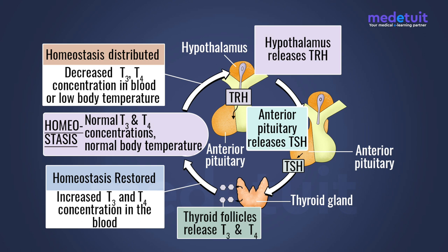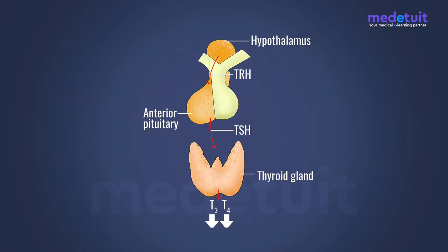TSH enters the bloodstream and acts on the thyroid follicles, and is responsible for the synthesis and release of thyroid hormone. The levels of thyroid hormones T3 and T4 are well maintained by the action of TSH. When there is a decrease in thyroid hormone level in the blood, the negative feedback system operates so that more TRH is secreted from the hypothalamus, and in response, more TSH is secreted from the adenohypophysis, thereby stimulating the thyroid gland.